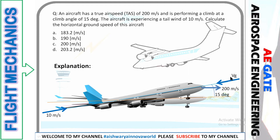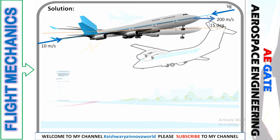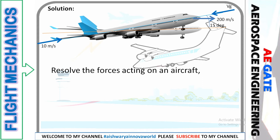The horizontal ground speed doesn't mean it will be inclined — it means the relative speed at which the aircraft is moving with respect to the ground. I hope this schematic diagram is clear. Now it's time to resolve the forces acting on the aircraft.